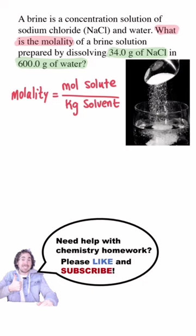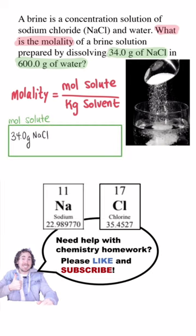Neither given value is in the correct unit for molality, so we'll need to convert them first. The solute was given to us in grams and we need to convert that to moles, so we'll need the molar mass of sodium chloride. Find both on the periodic table and add the molar masses together. We get about 58.5 grams per mole.